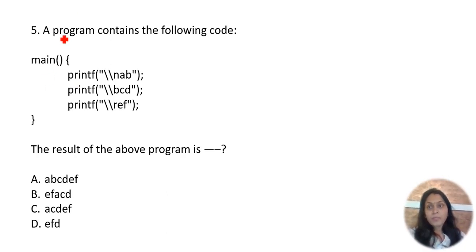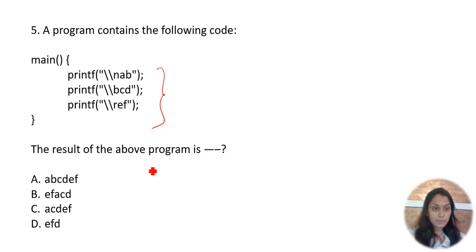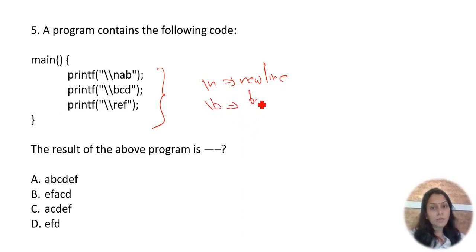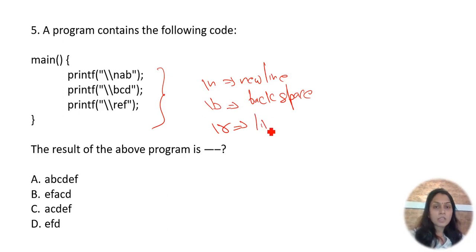A program contains the following code with three printf statements. What will be the result? Backslash n is a new line, backslash b means backspace, and backslash r means line feed (carriage return). The first printf prints 'ab' on a new line.